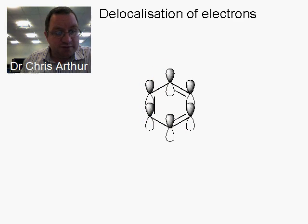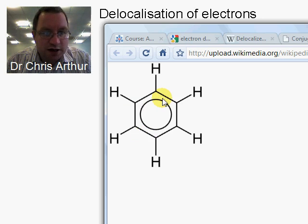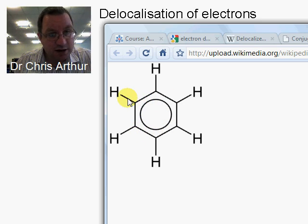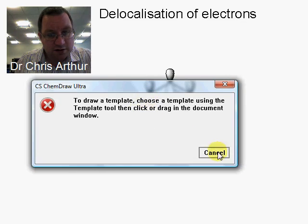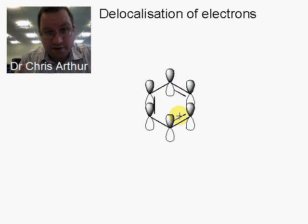You might have seen structures that look like this — structures of benzene where we have the 6-membered ring and then we draw a circle in the middle. That's normally how we teach school students to draw these molecules. The circle itself actually hints at something we're seeing here: the electrons are free to go around and around this ring system. The electrons are delocalized.